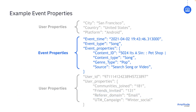Each event type will have some specific attributes or properties that add context to the event. For example, if the event is clicking on an ad, the campaign ID might be a property. If it's a purchase, maybe the product ID or cart amount might be a property. This event is called Play Song or Video. The extra context we're getting from its properties are that it's a song, not a video, what song it is, and what its genre is.